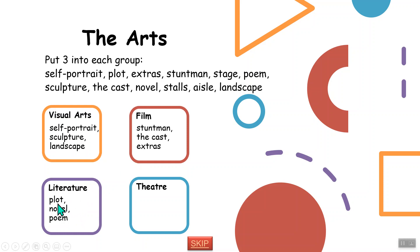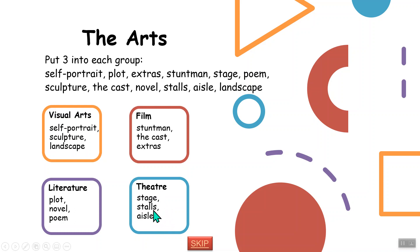The plot can also be in a film — it's the story. Novel, poem. Theater: the stage, stalls — the seats in front of the stage — and the aisle, which is the middle walkway.